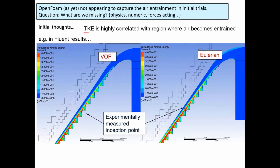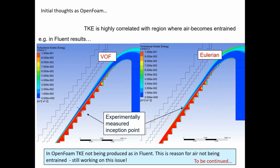The turbulent kinetic energy in Fluent shows your boundary layer moving up, and where it gets close to the free surface is experimentally where the inception point was. If you don't predict turbulent kinetic energy correctly, you won't get correct air entrainment — they're strongly correlated. In the OpenFOAM model, the turbulent kinetic energy is different, which explains why it doesn't produce the same air entrainment as Fluent. There are still things to investigate before we know how this can be reliably used.